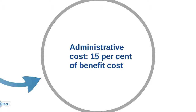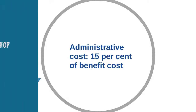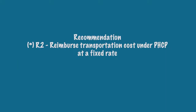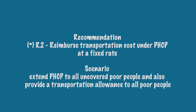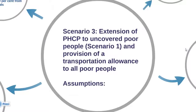Let's take a look at another example: recommendation number 2, to reimburse transportation costs under PHCP. This can be converted into a practical scenario to extend PHCP to all uncovered poor people — the same as the previous scenario — but also to provide a transportation allowance to all poor people. As scenario 1 has already been designed, we will focus only on the transportation allowance in this scenario.